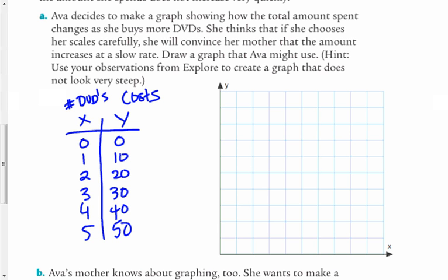Now what I want to do is change the scale. I want to pick a scale that will make it seem like she's not spending too much money. And I think what I want to do is I'm going to go by tens on this axis. So this is 10, 20. And you could experiment with this a little bit. But what I'm going to do to make this, so I'm just going by tens here, which makes sense for the values we have. But on the x-axis, I'm going to stretch out. Instead of going by one DVD, I'm going to go by halves. So I'm going every other one.